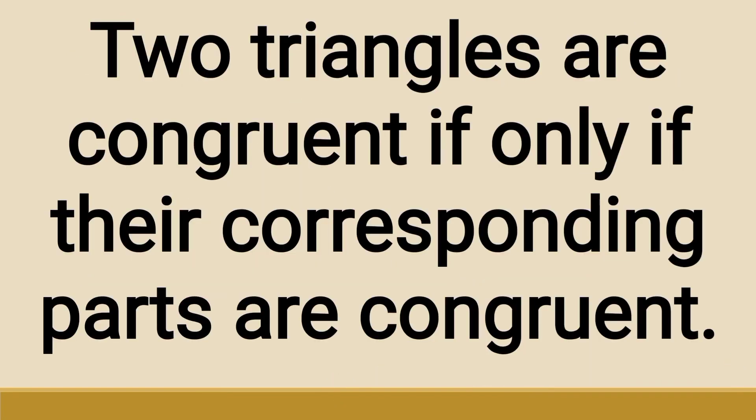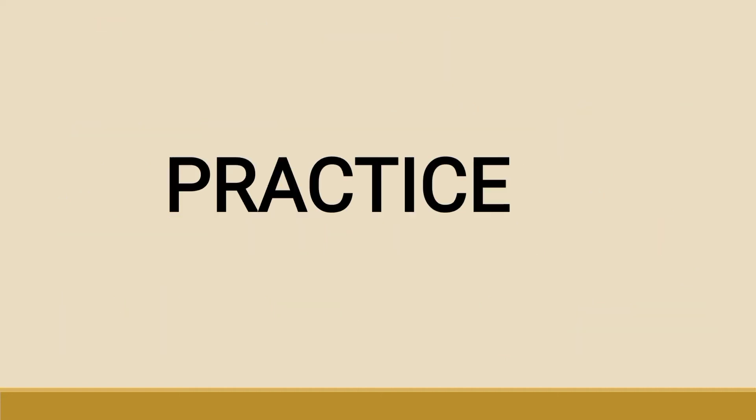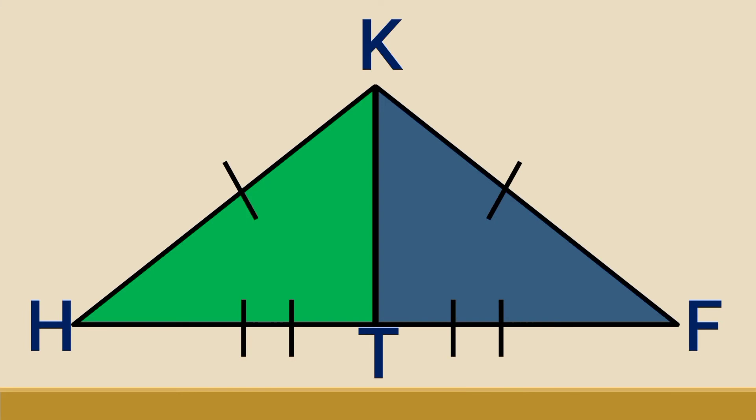Since the corresponding parts of triangle DOG and triangle CAT are congruent, the two triangles are congruent. Two triangles are congruent if and only if their corresponding parts are congruent.